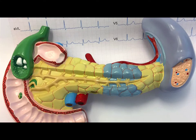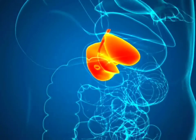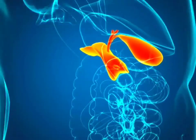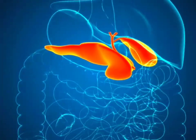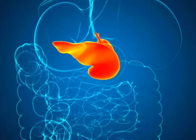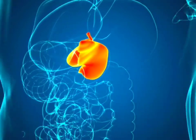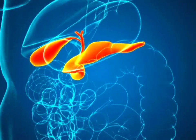In the duodenum, the first section of your small intestine, where food is ready to be digested, bile travels through the common bile duct. Your gallbladder is empty after eating and looks like a deflated balloon that has to be filled again.